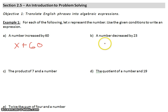Now we move on to B. A number decreased by 23. We know a number is X. Decreased by means subtraction, and 23.